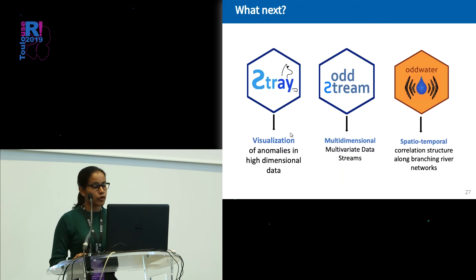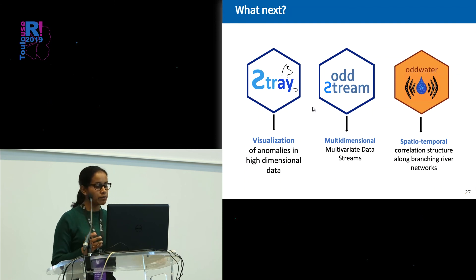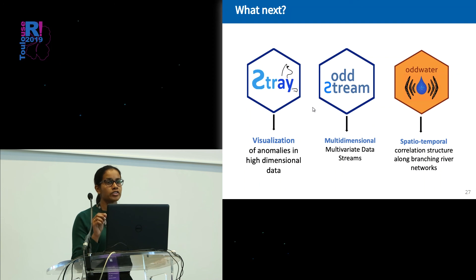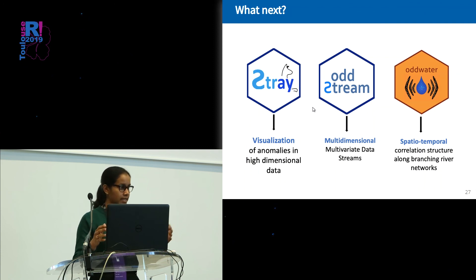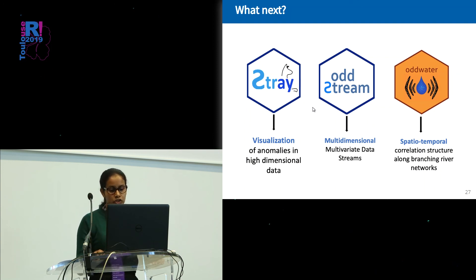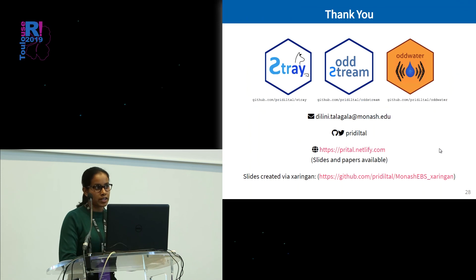What's next? For stray, we hope to improve the visualization of anomalies in high-dimensional data. For oddstream, at the moment it can handle only one-dimensional multivariate data — one measurement per sensor. But there are sensors that provide multiple measurements, giving a tensor dataset, so our next attempt is to extend it to handle multidimensional multivariate data streams. For water, we hope to extend it to consider the spatiotemporal correlation structure on branching river networks.